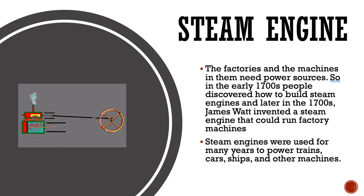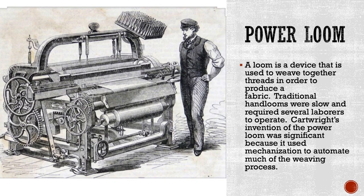Steam engines were used for many years to come, powering trains, cars, ships, and other machines. The power loom — a loom is a device used to weave together threads in order to produce a fabric. Traditional hand looms were very slow and required several laborers to operate. Cartwright's invention was important because the power loom used machines that could automate much of the weaving process, making it much faster and easier.